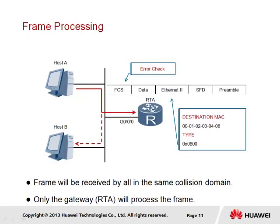Transmission of the frame by host A will see its propagation across the local network in a shared collision domain, resulting in the frame also being received by host B. Host B, however, will determine that the destination MAC address does not match its own and will discard the received frame. The gateway will also receive a copy of this frame and will start the same process. We see here an example of the frame structure as it is received, for which the integrity of the frame will be initially checked to ensure it has not suffered any complications during transit.